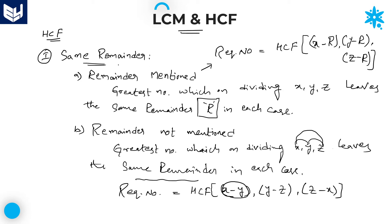To summarize: for same remainder, first case with remainder mentioned — HCF of (x minus R), (y minus R), (z minus R). If remainder is not mentioned, directly take the difference between numbers 1 and 2, 2 and 3, and 1 and 3, then calculate the HCF of those numbers. That is the required number. This is about first model — same remainder.